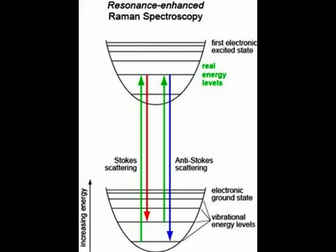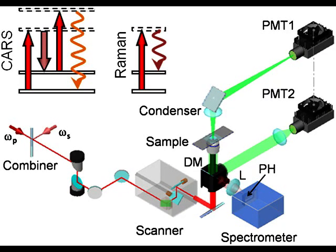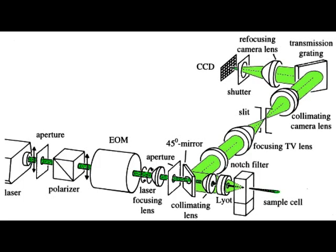Resonance Raman Spectroscopy: the excitation wavelength is matched to an electronic transition of the molecule or crystal so that vibrational modes associated with the excited electron state are greatly enhanced. This is useful for studying large molecules such as polypeptides which may show hundreds of bands in conventional Raman spectra. Coherent Anti-Stokes Raman Spectroscopy uses two laser beams to generate a coherent anti-Stokes frequency beam which can be enhanced by resonance. Raman Optical Activity measures the vibrational optical activity by means of small difference in intensity of Raman scattering from chiral molecules.